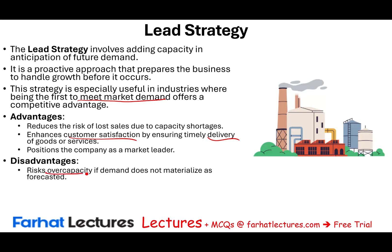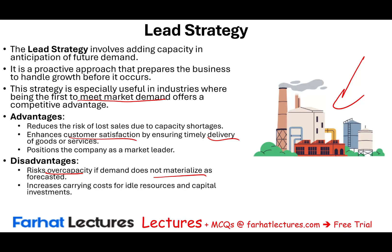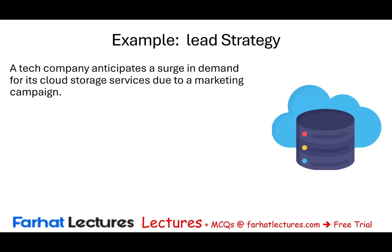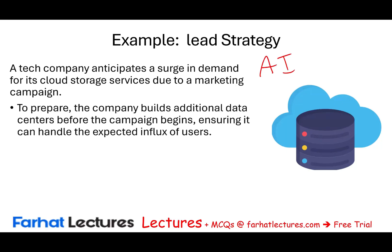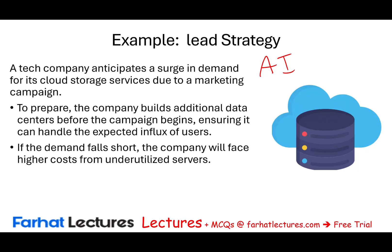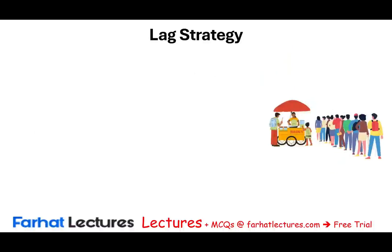The advantages of a lead strategy include reducing the risk of lost sales, keeping customers happy by delivering products on time, and positioning the company as a market leader. The disadvantages include the risk of overcapacity if demand does not materialize — idle capacity, opportunity cost from tied-up money in fixed assets, and higher carrying costs. A current example: tech companies building data centers in anticipation of AI demand, which risks higher costs from underutilized servers if demand falls short.